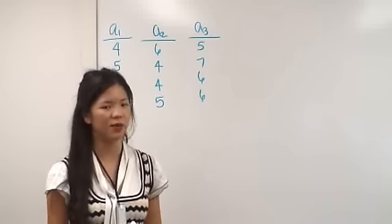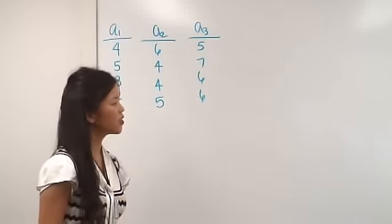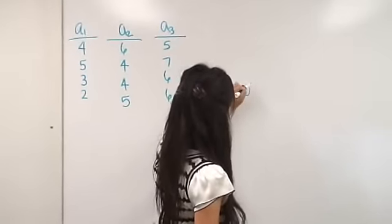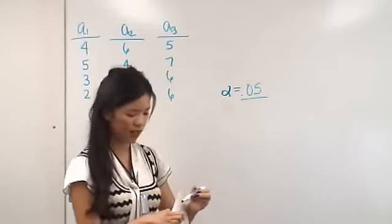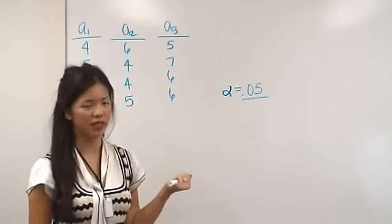If you put all of the type one errors together, that's called your family-wise error rate. So basically, the whole assumption is that if you have an alpha level of .05, that means that five times out of 100, we could get significance due to chance alone. That's our type one error rate.